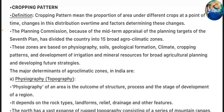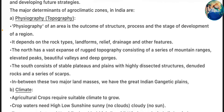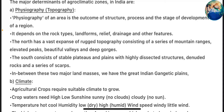The major determinants of agro-climatic zones in India include physiography or topography. Physiography of an area is the outcome of structure, process, and the stage of development of a region. It depends on rock types, landforms, relief, drainage, and other features. The North has a vast expanse of rugged topography consisting of mountain ranges, elevated peaks, beautiful valleys, and deep gorges. The South consists of stable plateaus and plains with highly dissected structures, denuded rocks, and a series of scarps. In between these two major land masses, we have the Great Indian Gangetic Plains.